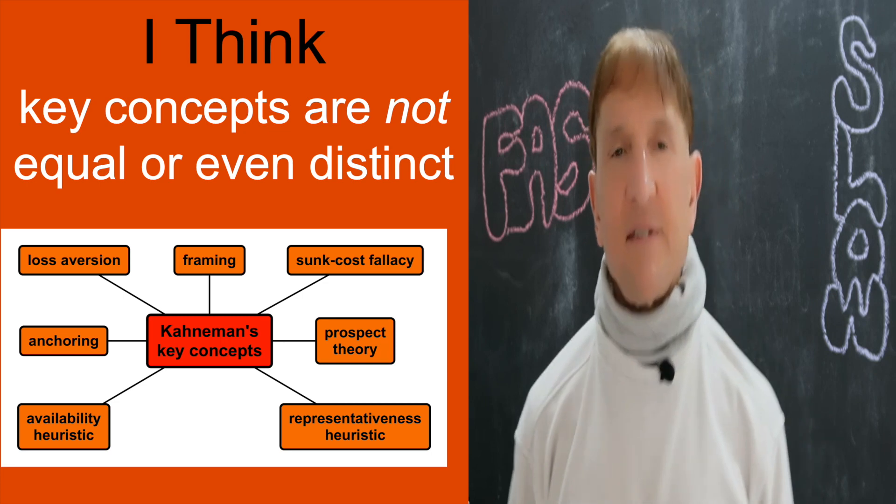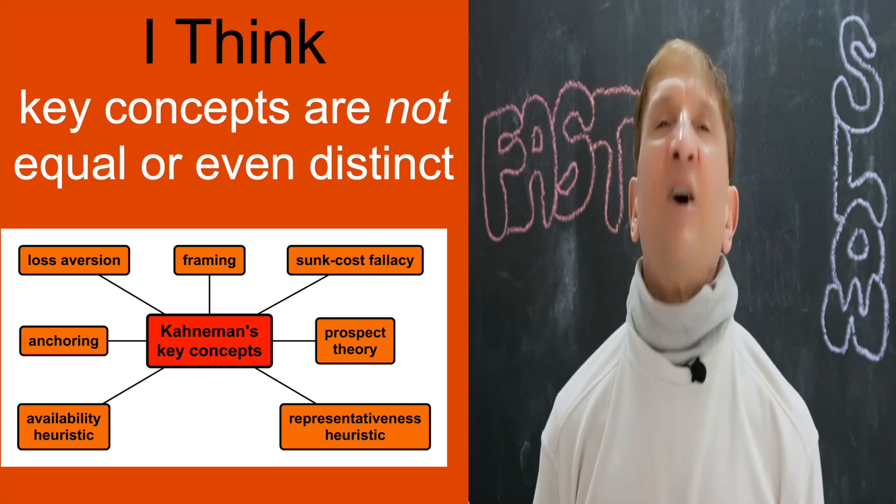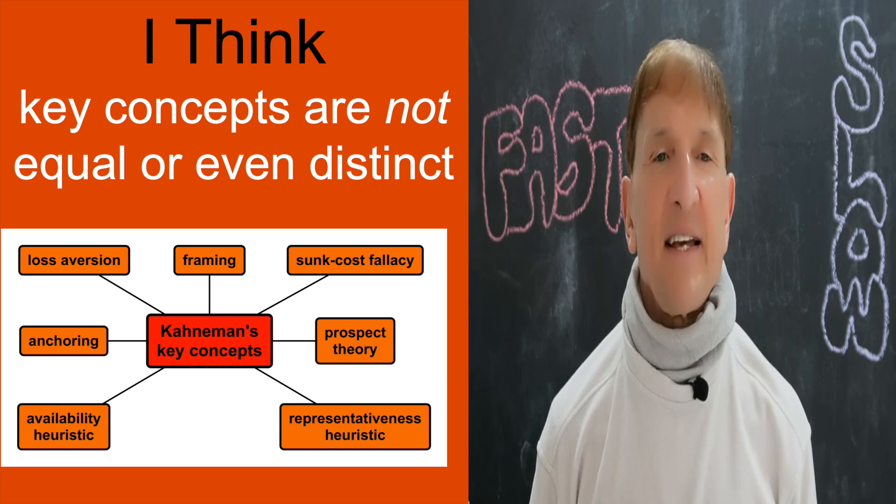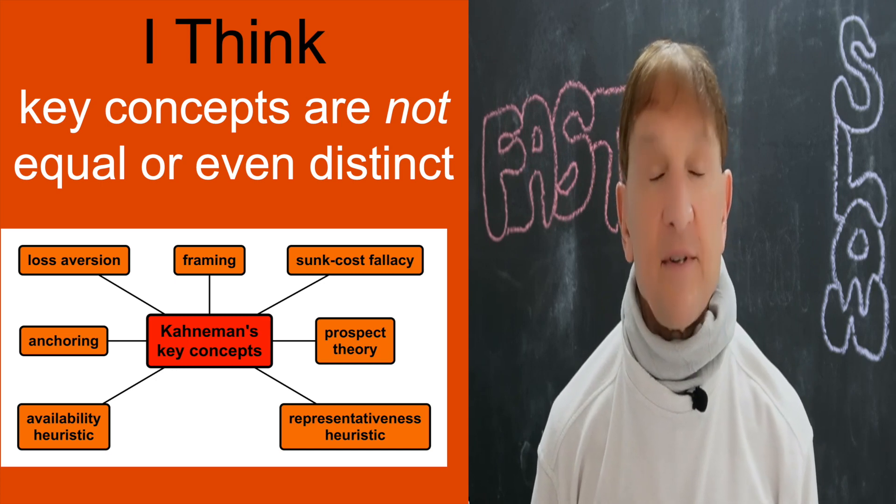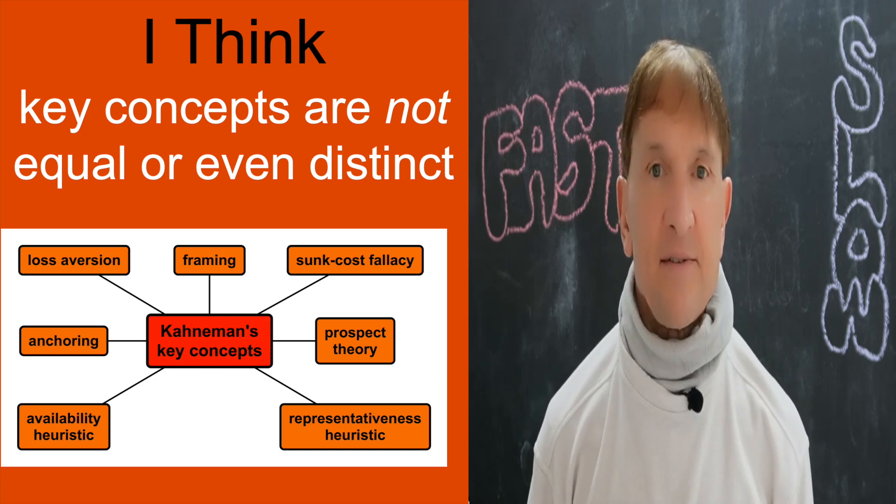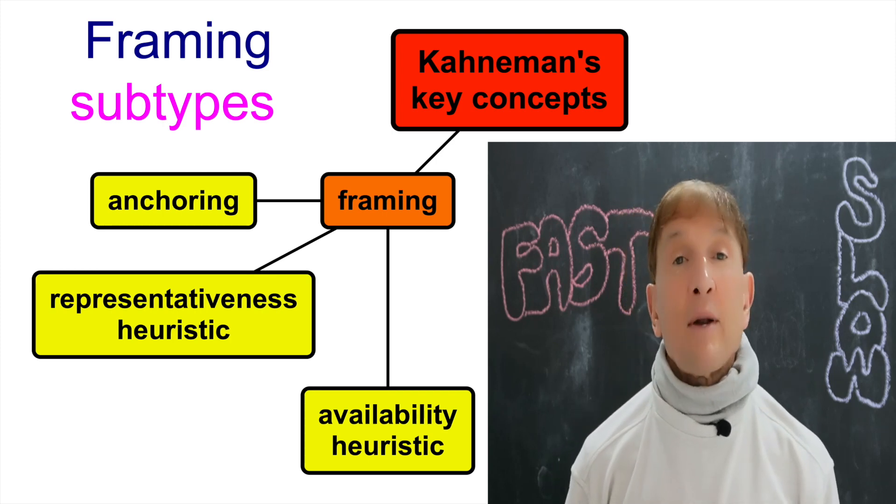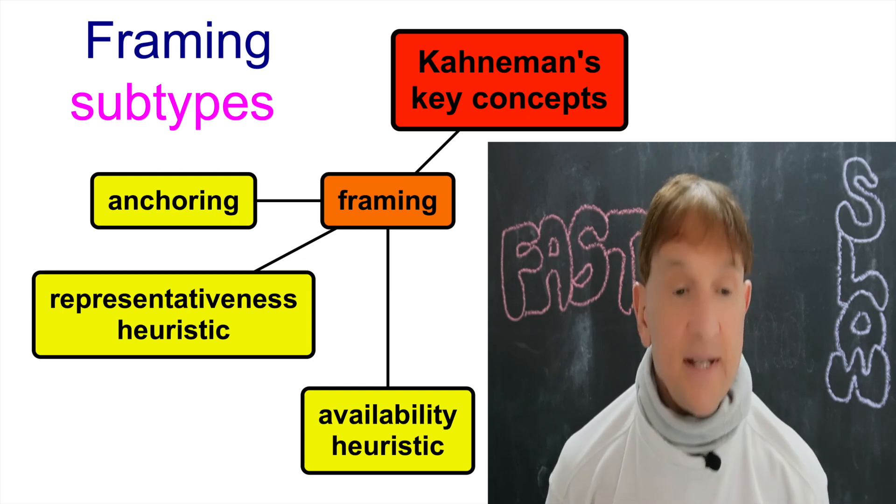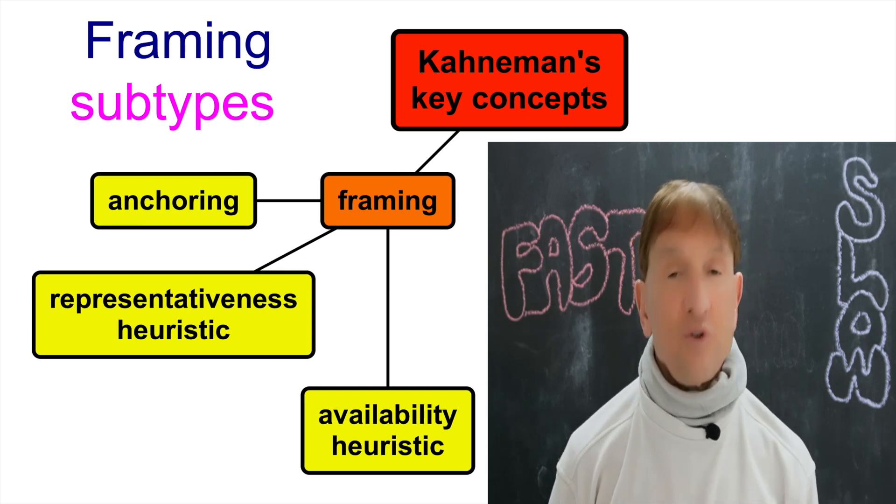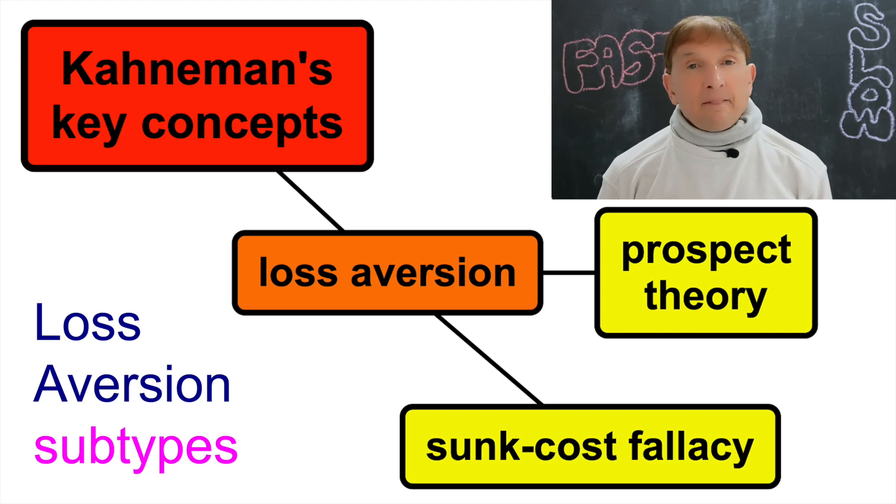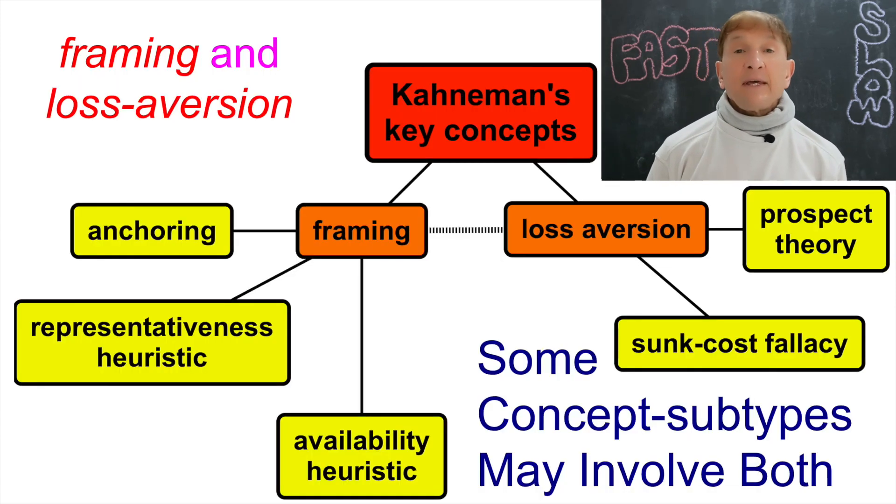What do I think about these seven key concepts? All of them exist. They're real. But they're not distinct, and some of them overlap. And some are more important than others. For instance, framing has subsections, I think, to me: anchoring, representativeness heuristics, and availability heuristics. Whereas loss aversion is related to prospect theory some of the time and certainly to sunk cost fallacy. And there are some situations in which framing and loss aversion work together.